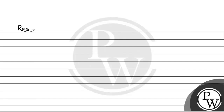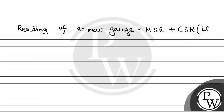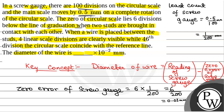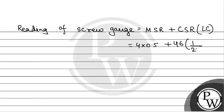Now we will calculate the reading of the screw gauge. Reading of screw gauge = main scale reading + circular scale reading × least count. Main scale reading = 4 × 0.5 = 2 mm. Circular scale reading = 46 × (1/200) = 46/200 = 23/100 mm. So total reading = 2 + 0.23 = 2.23 mm. This is the reading of the screw gauge.